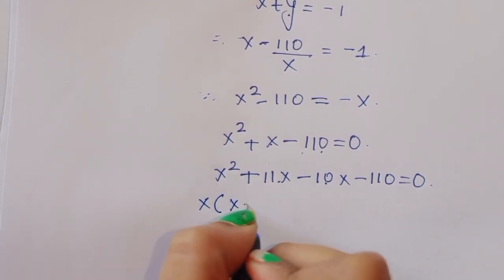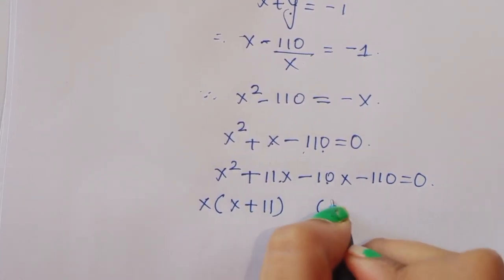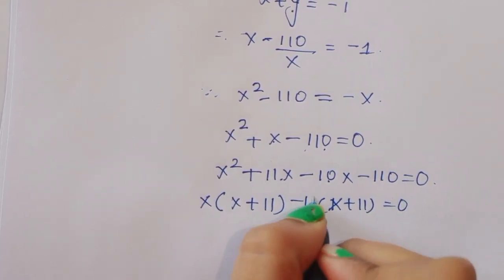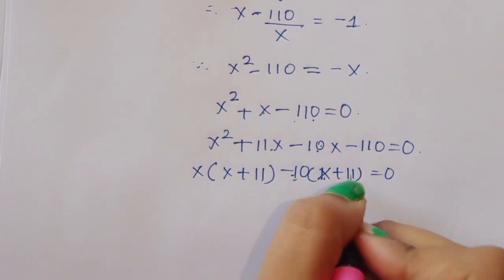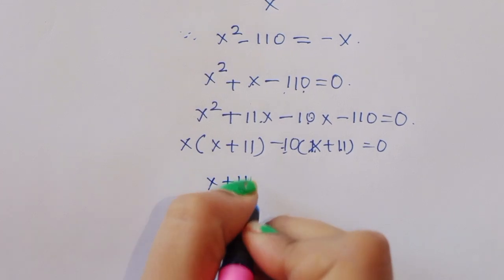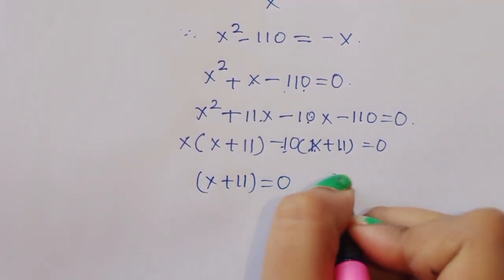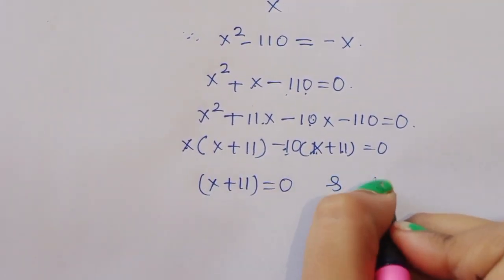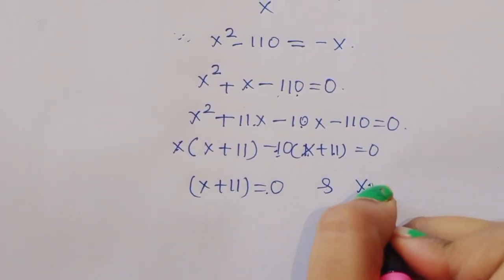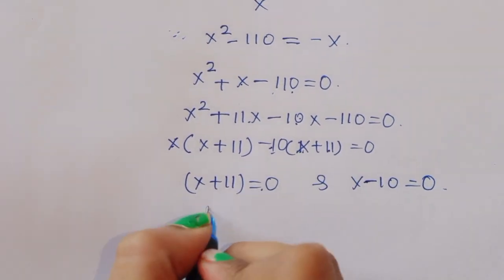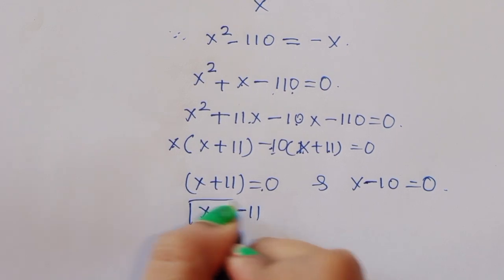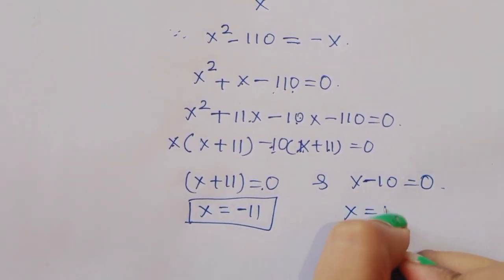Taking common factors: x(x plus 11) minus 10(x plus 11) equals 0. So (x plus 11)(x minus 10) equals 0. Therefore x plus 11 equals 0, giving x equals minus 11, or x minus 10 equals 0, giving x equals 10.